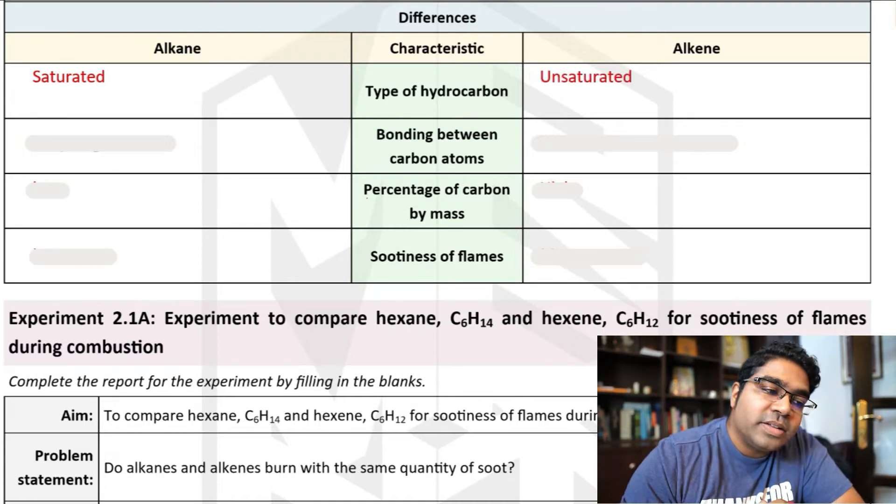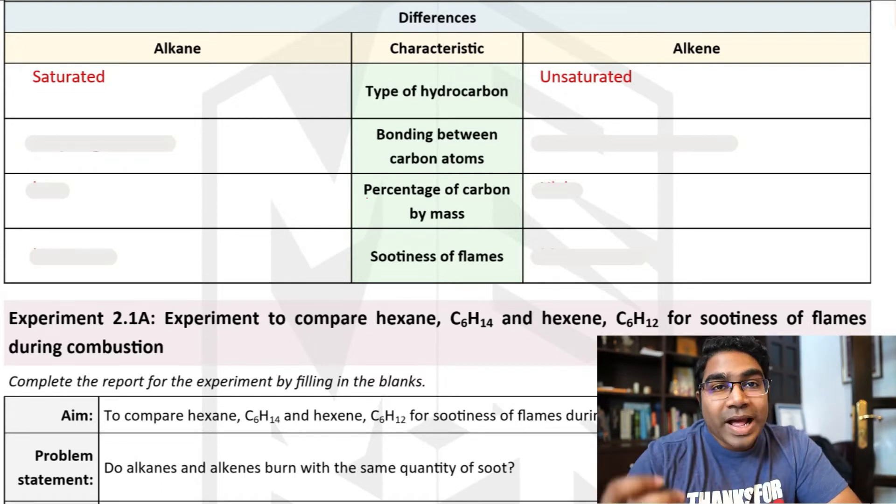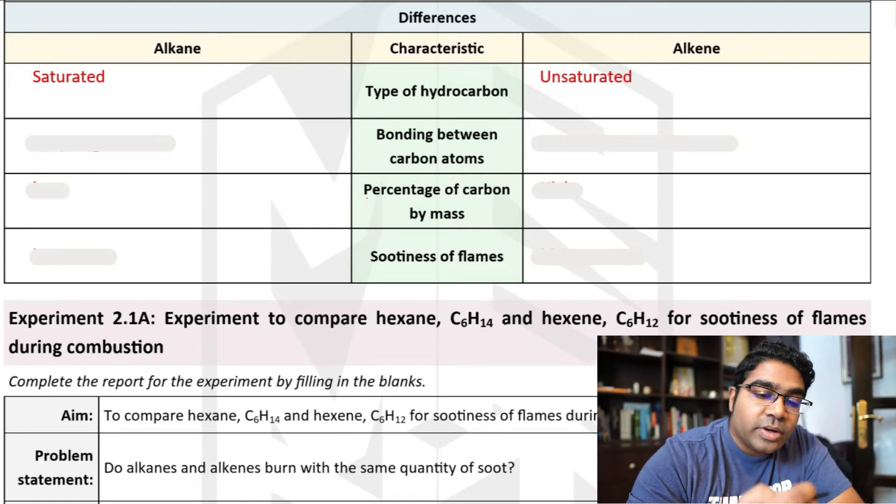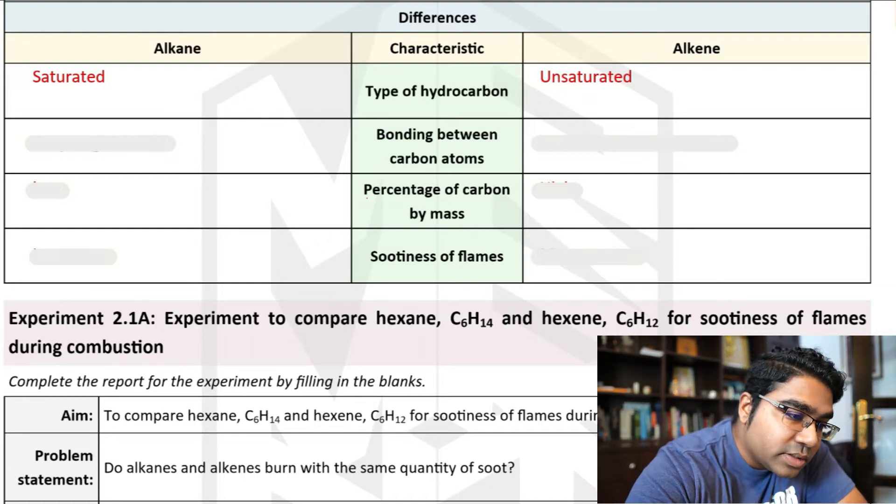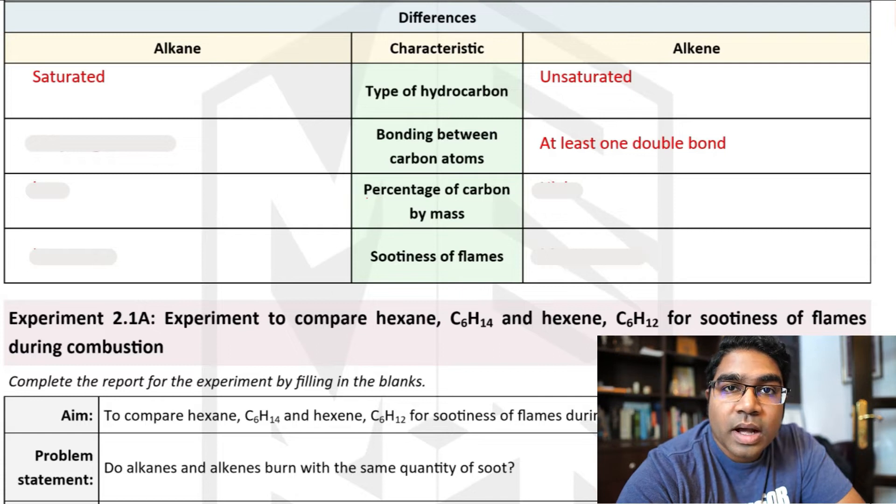Whereas alkenes are unsaturated hydrocarbons because of the presence of the next point, that is the type of bonding. And so alkenes are unsaturated hydrocarbons because of the presence of the C-C double bond, at least one double bond between two carbon atoms.